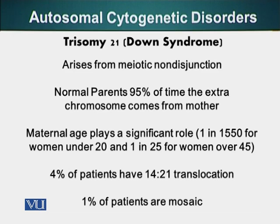Maternal age plays a very significant role. For example, for women under 20, 1 in 1550 births will result in a child with Down syndrome. Whereas in the category of women over 45, 1 in every 25 births carries a probability of the child having Down syndrome.